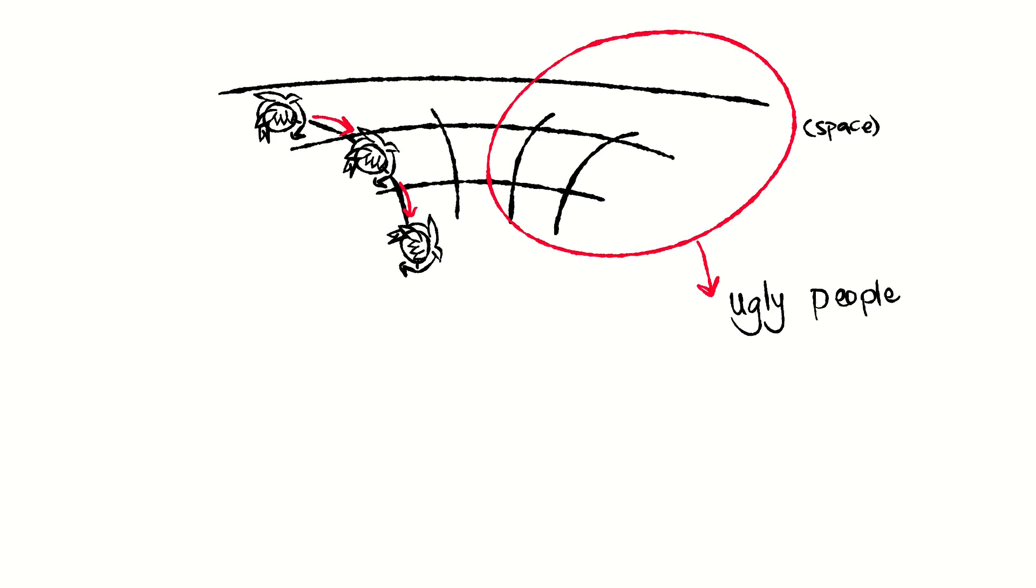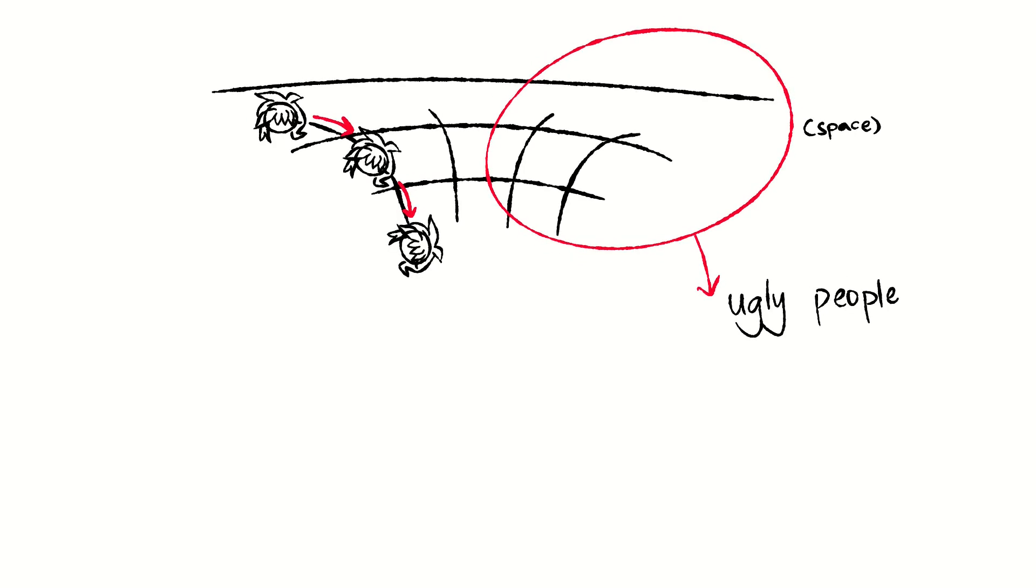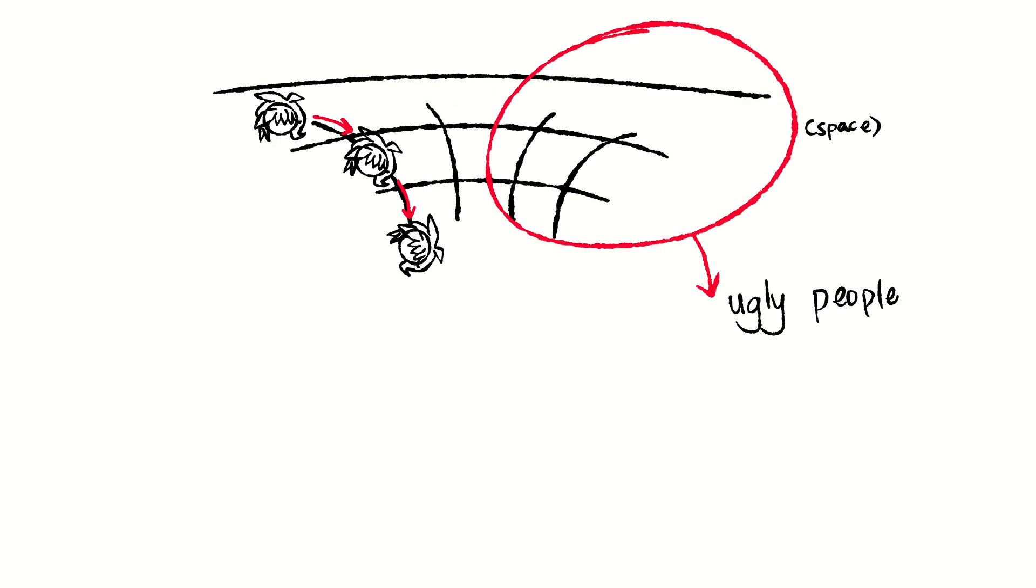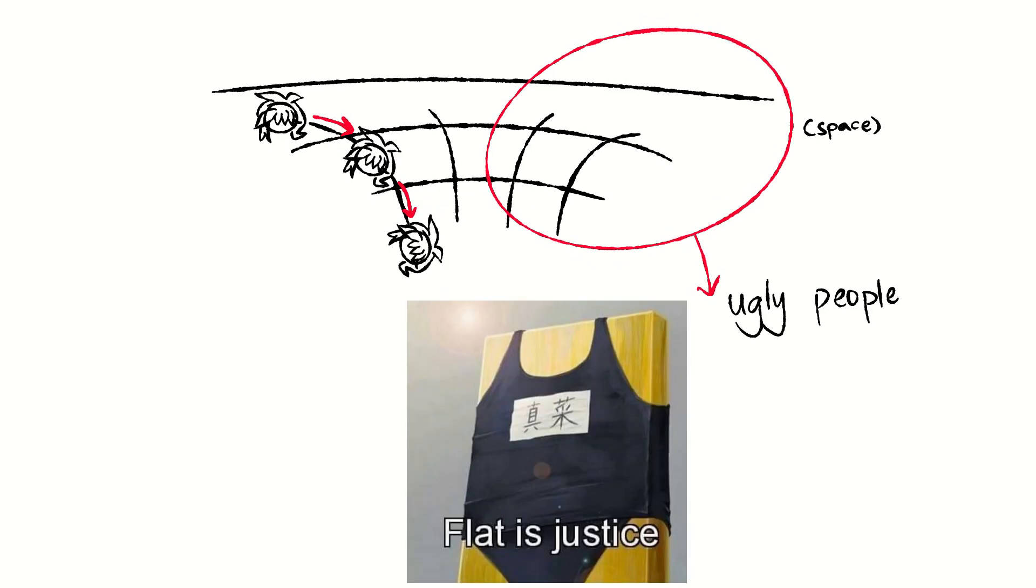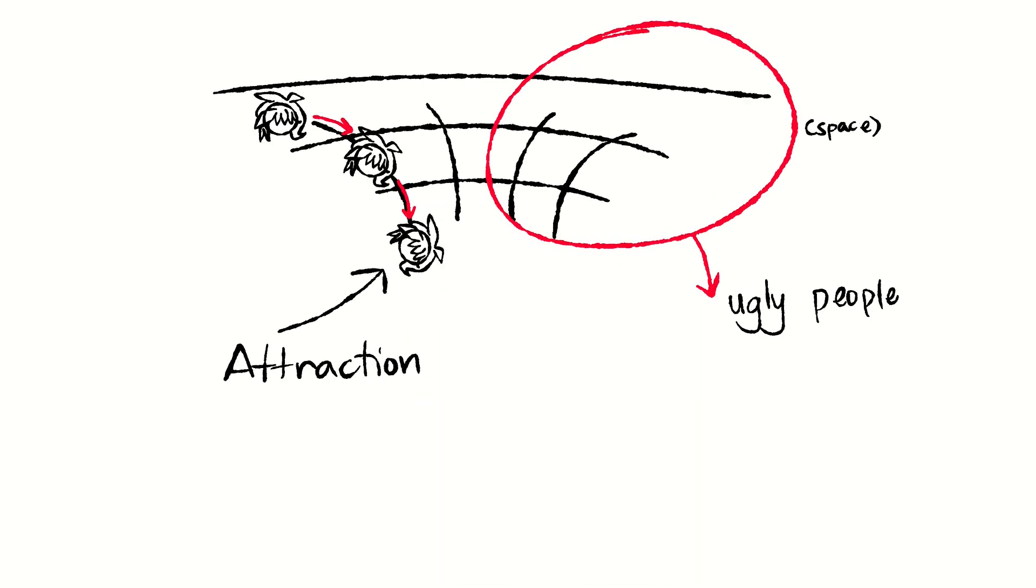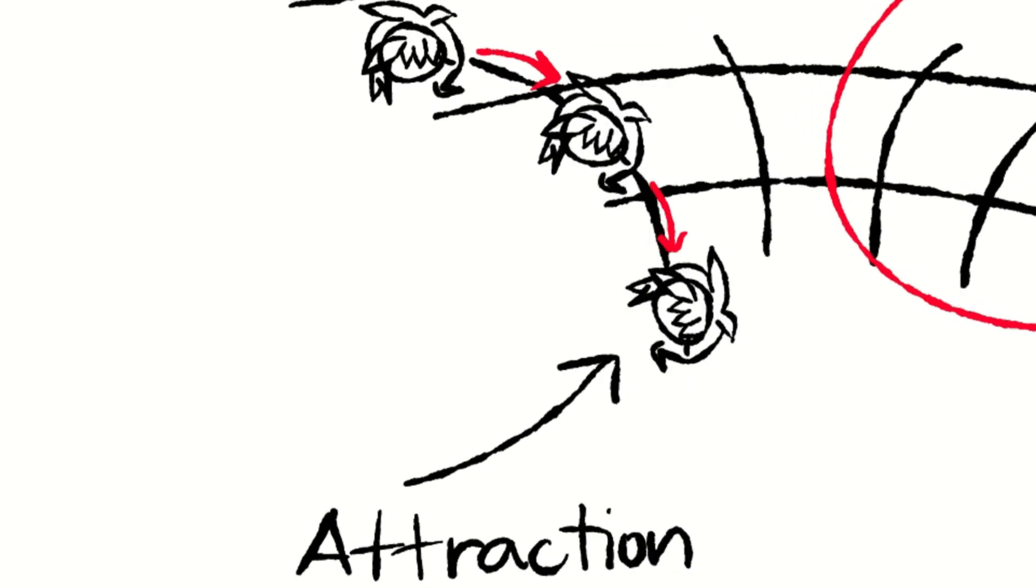Since unattractive people are space, that means objects, I mean people, will follow space and its curves, no matter how curvy or uncurvy they are. In an interaction we describe as attraction. Wait, doesn't that statement contradict the earlier part of the argument?